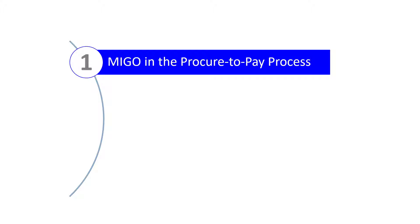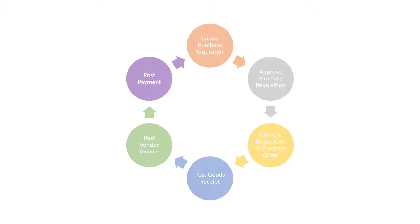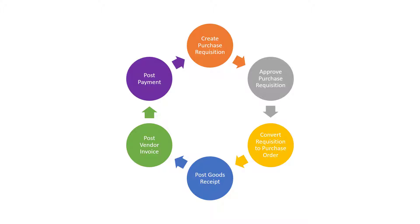Let's begin with where transaction MIGO fits in the procure-to-pay process. Transaction MIGO is used to post goods movements — in this case, the posting of a goods receipt against a purchase order.